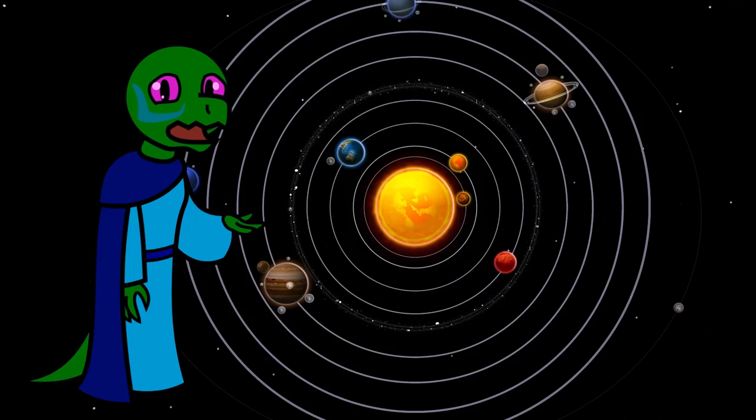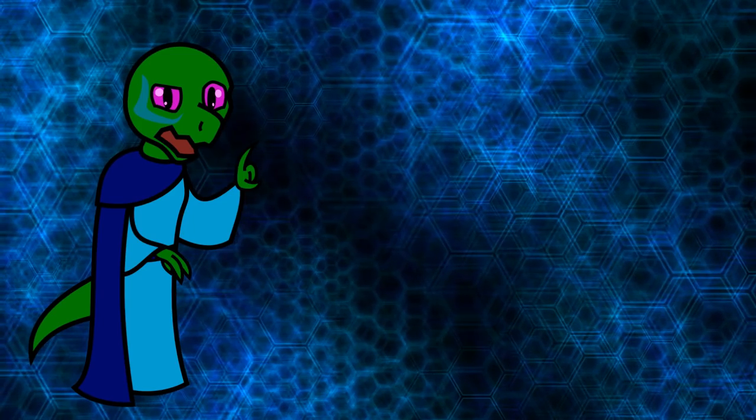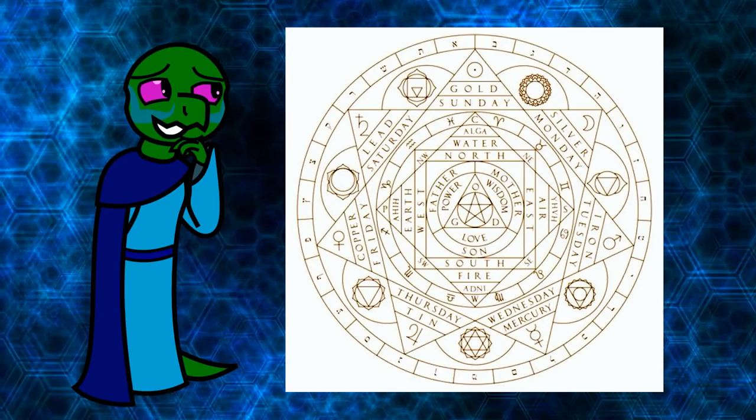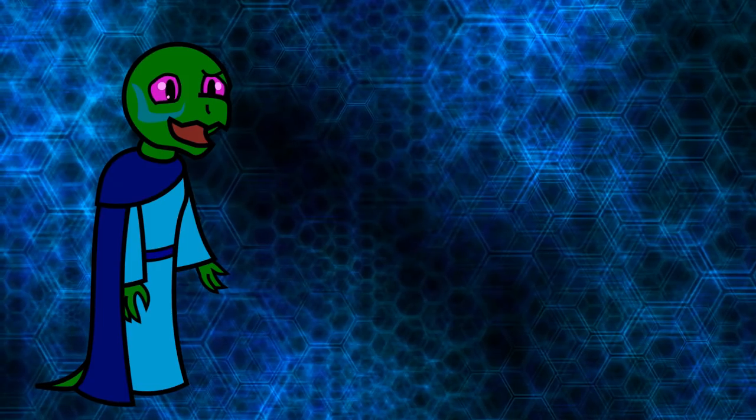Like Mendelian genetics or the heliocentric model of the solar system, a model only has as much value as its accuracy. You don't see many alchemists trying to turn lead into gold for a reason. So what makes the political spectrum a bad model?